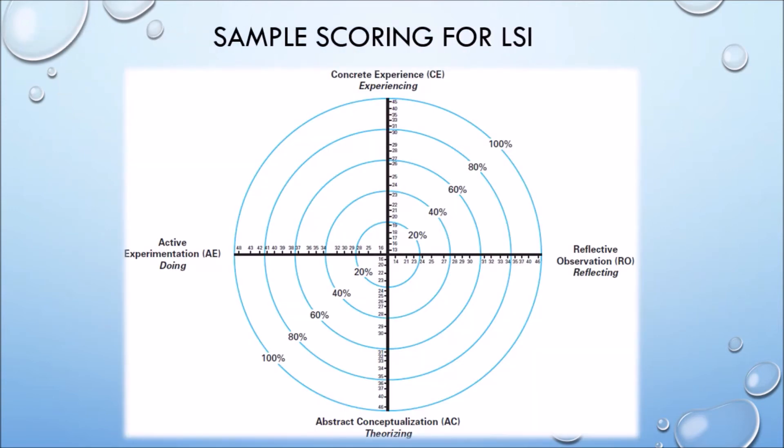For the LSI scoring profile, find the point on the vertical CE axis that corresponds with your score. Do the same for your RO score, your AC score, and your AE score. By plotting your score on each axis of the figure and joining those points together, you will have produced a kite-shaped profile. This profile identifies your learning style.